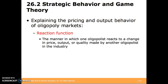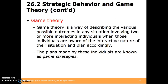So how do oligopolists choose their output and price levels? They can consider a reaction function — the manner in which one oligopolist reacts to a change in price, output, or quality made by another oligopolist in the industry. Then they may employ game theory, which is a way of describing the various possible outcomes in any situation involving two or more interacting individuals when those individuals are aware of the interactive nature of their situation and plan accordingly.